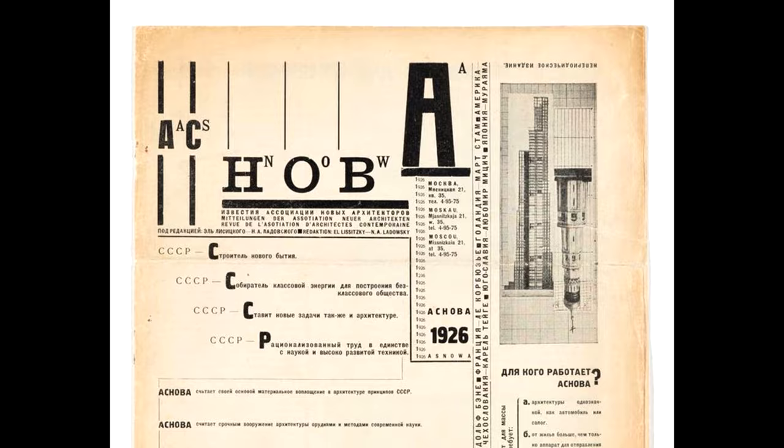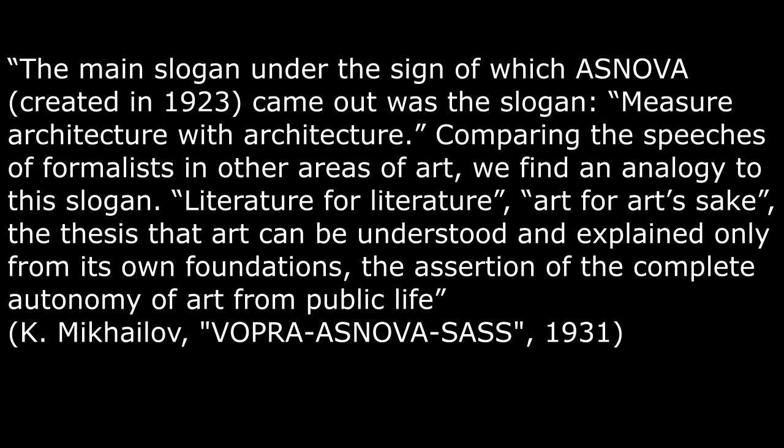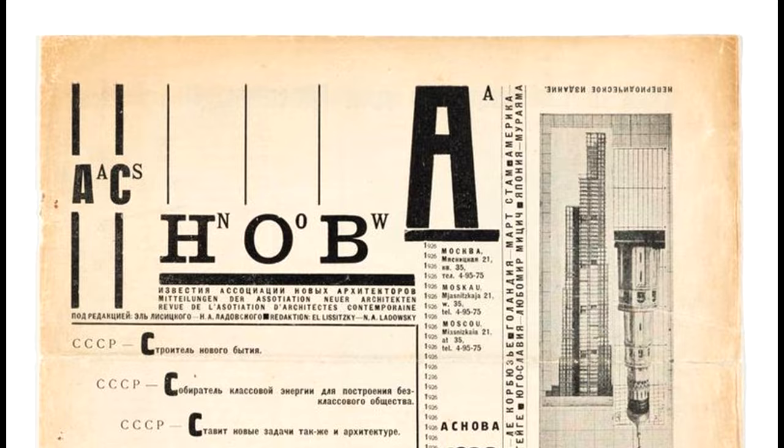Marxism denounces the capitalist theory of art for art's sake, which states that art shouldn't have any message or politics — this is only a cover to hide the bourgeois nature of supposedly neutral art. The rationalist organization ASNOVA actually claimed to support socialism, but still described their formalist principles by the phrase 'the measure of architecture is architecture' — the equivalent of art for art's sake in architecture, as pointed out by Soviet critics.